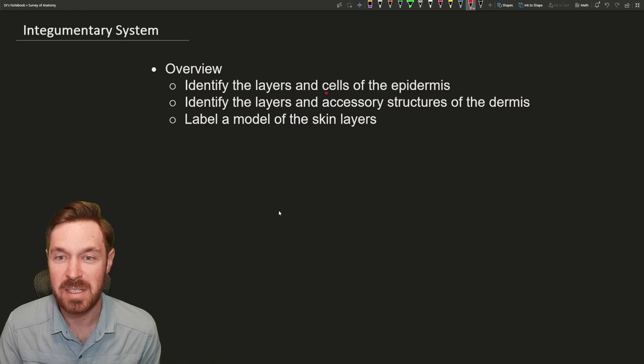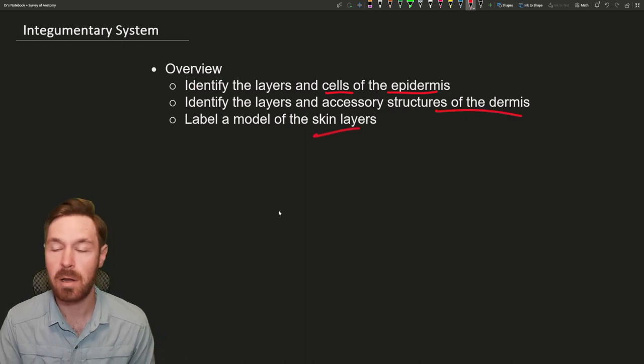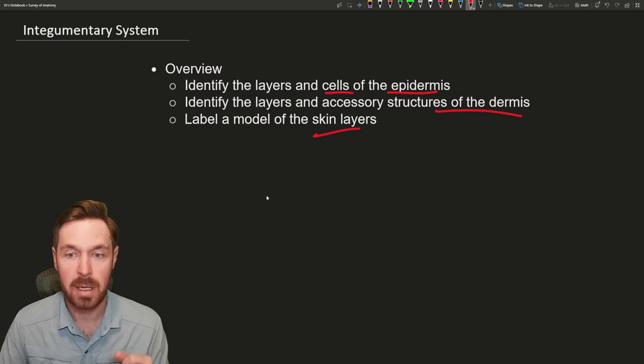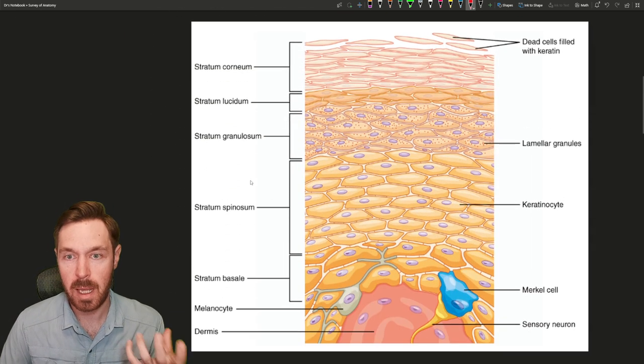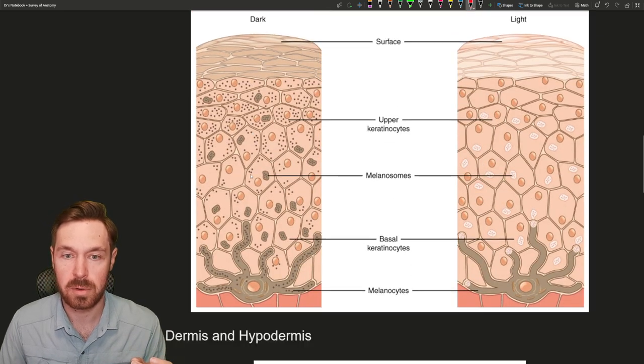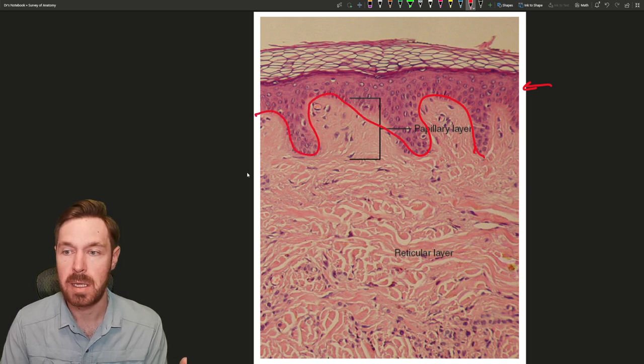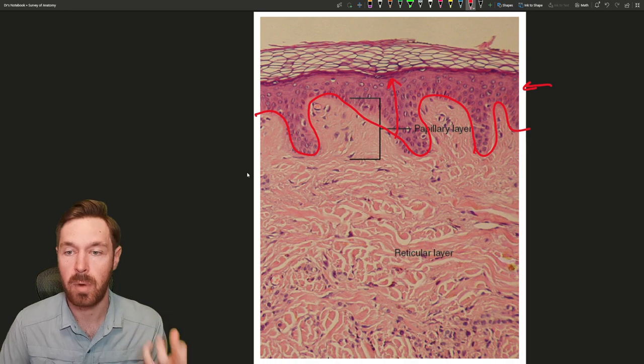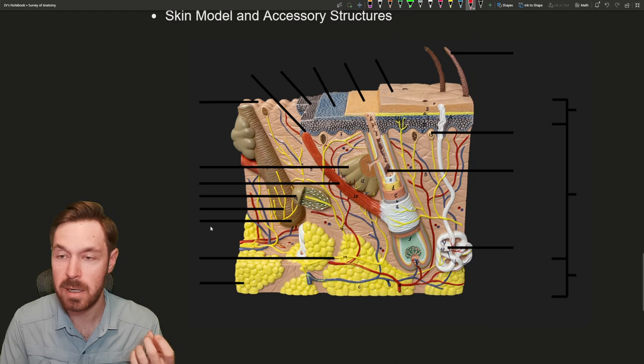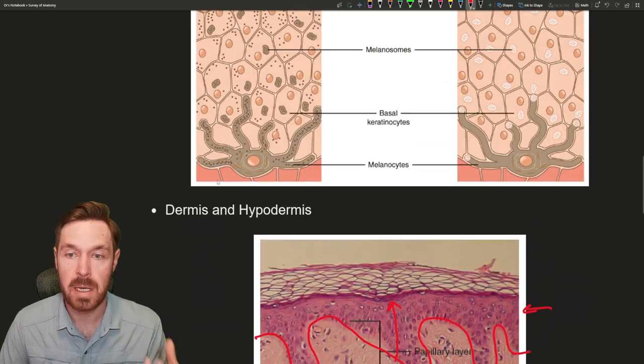In the overview, we're going to go over the different cells and layers of the epidermis, then talk about the structures and layers within the dermis itself. Then we're going to go through a model of the skin and label all the layers like in a lab. First up is the epidermis. When we talk about the epidermis, we're also going to talk about skin pigmentation. To show you where we're looking, I'm going to scroll down to this histology image here. The epidermis is this pink layer right here. This whole layer above this red line I'm drawing is the epidermis.